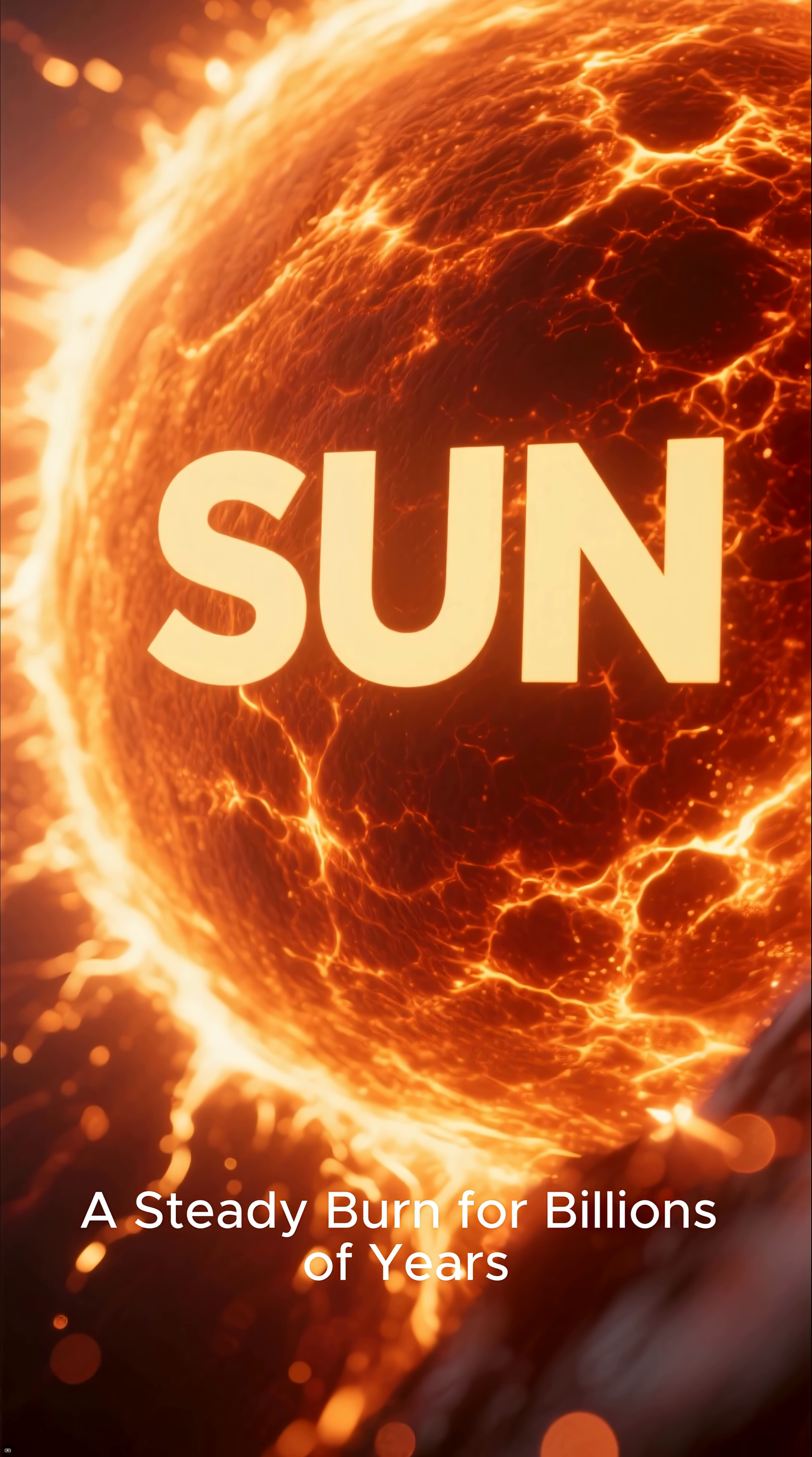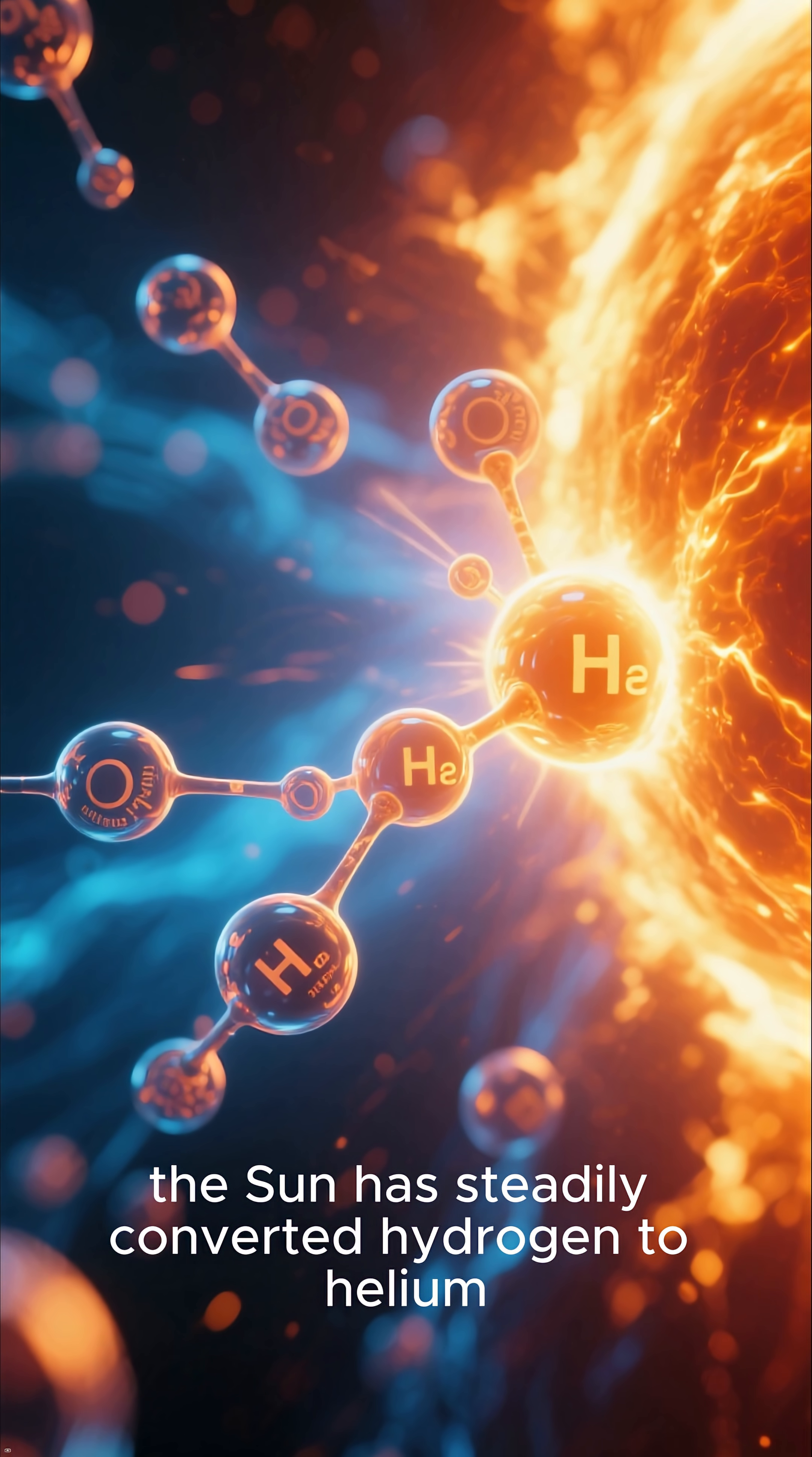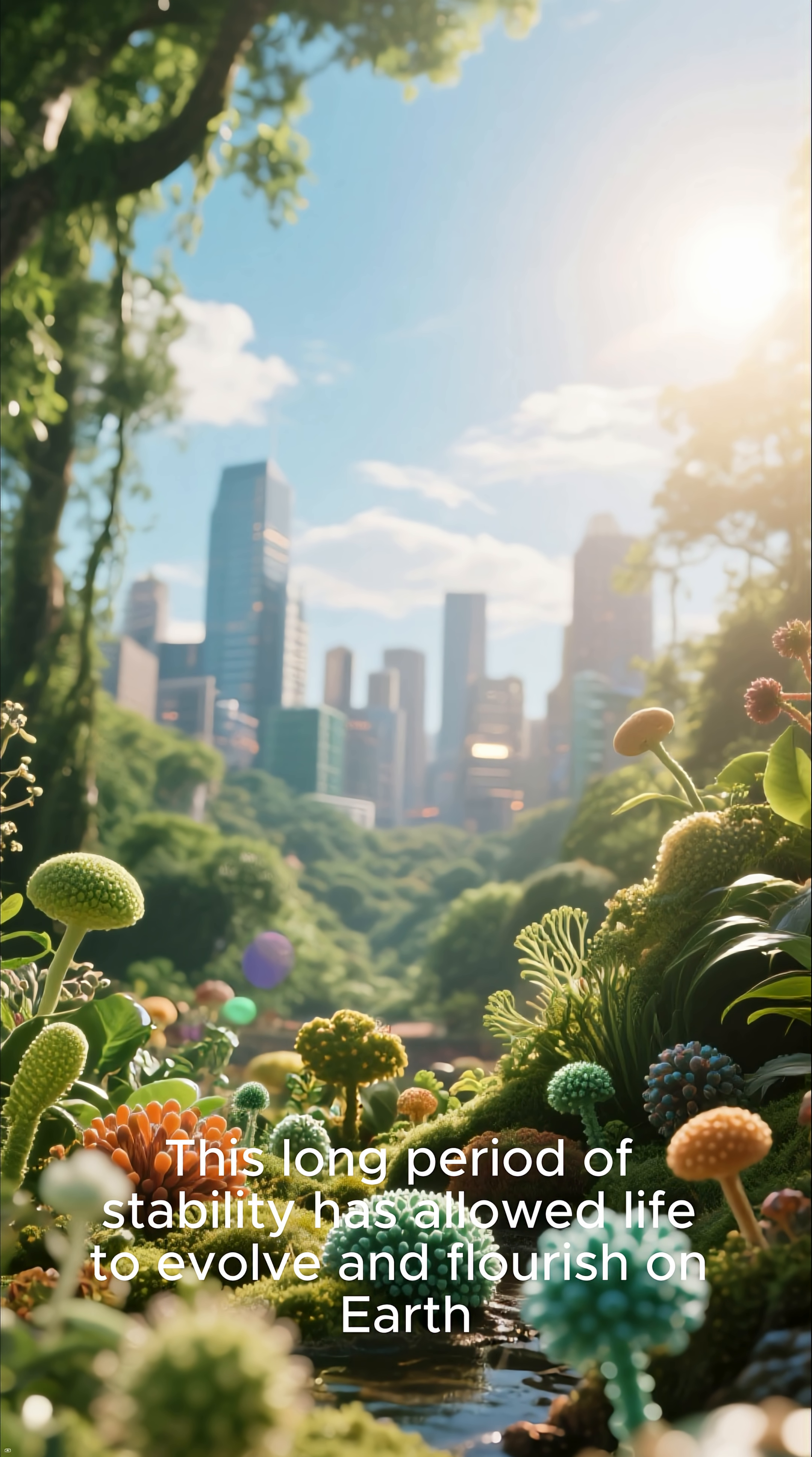A steady burn for billions of years. It's time to appreciate the sun's longevity. For the past 4.57 billion years, the sun has steadily converted hydrogen to helium, providing a stable and consistent source of energy for our solar system. This long period of stability has allowed life to evolve and flourish on Earth.